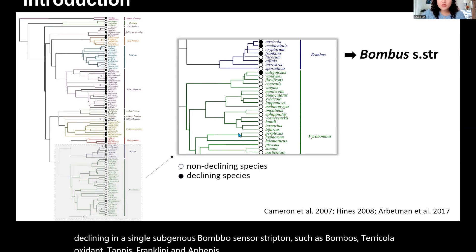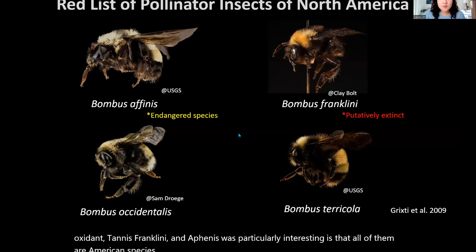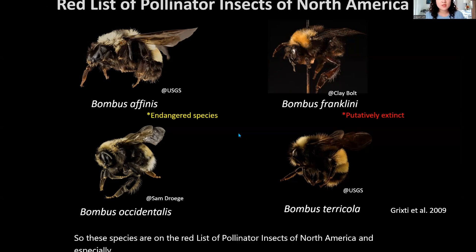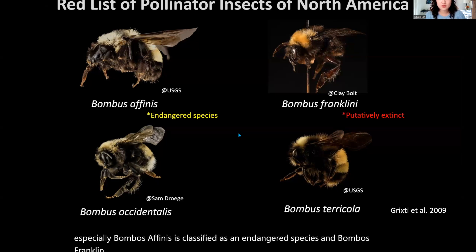What's particularly interesting is that all of them are American species. These species are on the red list of pollinator insects of North America. Especially, Bombus affinis is classified as an endangered species, and Bombus franklinii is considered as putatively extinct.